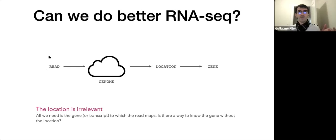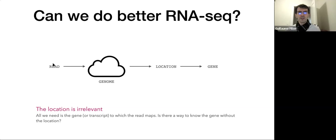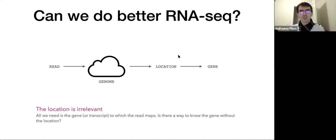The process of RNA-seq with BWA or Bowtie: you have a read, you map it in the genome, that gives you the location, and once you get the location you get the gene. From that you can compute the RPKM. But the issue is that the location is irrelevant — all we need is the gene. If we could just directly know that this read maps to that gene, we don't need to know where it goes in the genome. Is there a way to know the gene without necessarily computing the location?